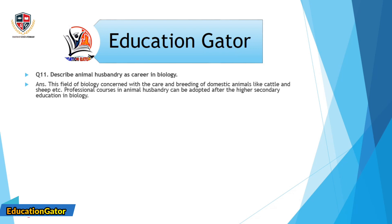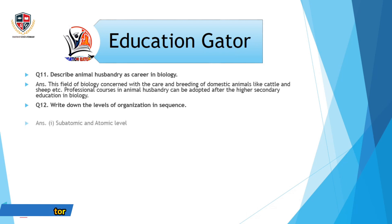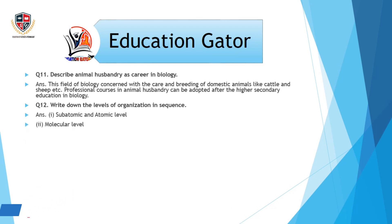Question number 11: Describe animal husbandry and career in biology. Ans. This field of biology is concerned with the care and breeding of domestic animals like cattle and sheep etc. Professional courses in animal husbandry can be adopted after higher secondary education in biology.